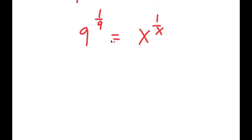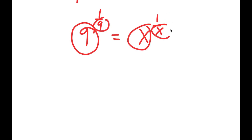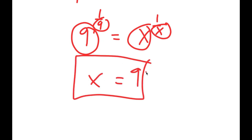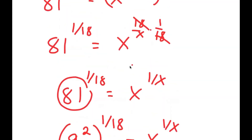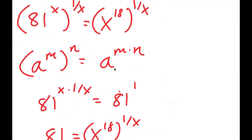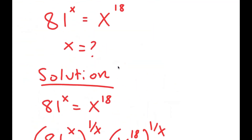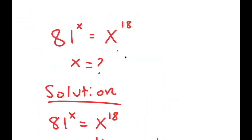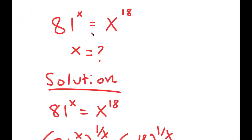Notice how this is in the form: a number to the power of 1 over that same number equals x to the power of 1 over x, meaning x is equal to 9. Going back to the original equation, let's go ahead and check if this is right.